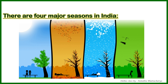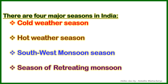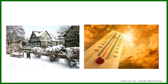Depending upon the climatic factors and weather patterns, there are four major seasons in India: the cold weather season, the hot weather season, the southwest monsoon season (also called the rainy season), and the season of retreating monsoon. 'Retreating' means the monsoon withdraws or goes back.